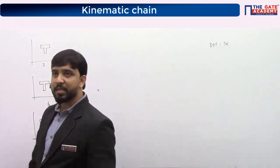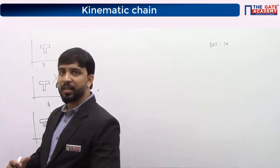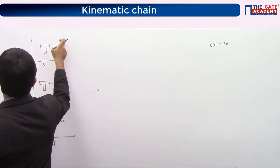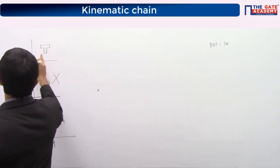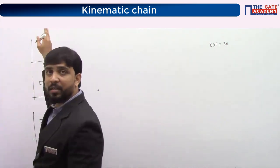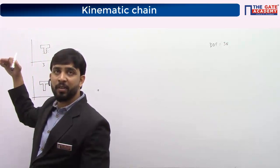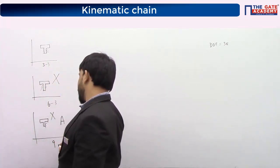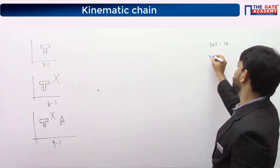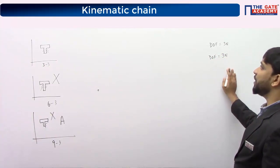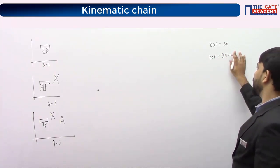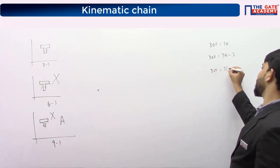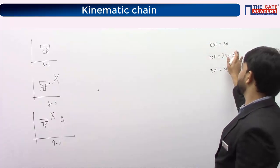In a kinematic chain all links are moving, but in a mechanism one link is fixed. Whenever you fix any body, it will lose all 3 degrees of freedom — it cannot move in x, y direction, or rotate. So for a mechanism with n links and one fixed, degrees of freedom starts from 3 into (n minus 1), which equals 3n minus 3. For a kinematic chain, degrees of freedom starts from 3 times n.